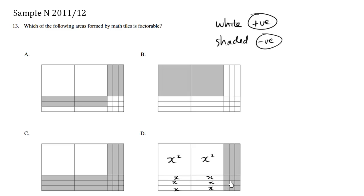And these little singular, tiny unit squares are considered 1. Now because we have this as shaded, it's negative 1 — we have a bunch of negative 1's. And these shaded sticks are negative x's.